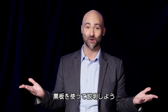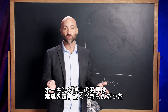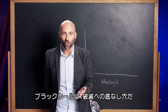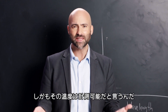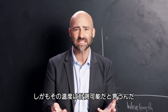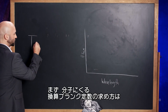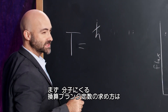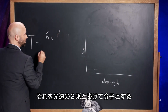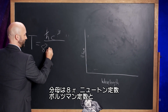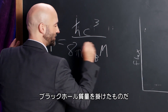So let's go to the chalkboard to check this out. Stephen Hawking's result was extraordinary and honestly counterintuitive. Who knew that black holes, the ultimate bottomless pits of destruction, would glow — would have a temperature? Hawking's formula for the temperature of a black hole is simply: temperature equals the reduced Planck's constant (which is Planck's constant divided by 2π), times the speed of light cubed, divided by 8π times Newton's gravitational constant times the Boltzmann constant times the mass of the black hole.